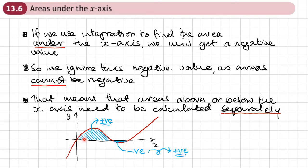If I used the limits spanning both regions at once, the negative part would begin to cancel out the positive part. If the area below equalled the area above, you'd get zero, which makes no sense. Or if the lower area were bigger, you'd get a negative answer — also meaningless. So calculate bits above and below the axis separately, using different limits, and change any negative result to positive before adding.